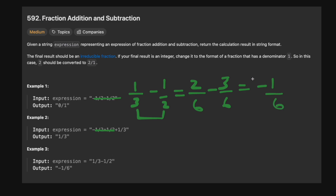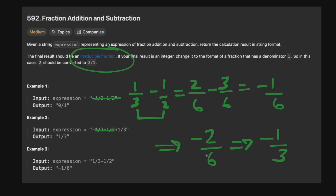In this case minus 1/6 is already fully reduced since we can't reduce 1 further. But if our final solution were minus 2/6, that's not the least reducible form — we can divide by 2 to get minus 1/3. So we need to make sure our final solution is in irreducible form. We need to find the greatest common divisor and divide it out.